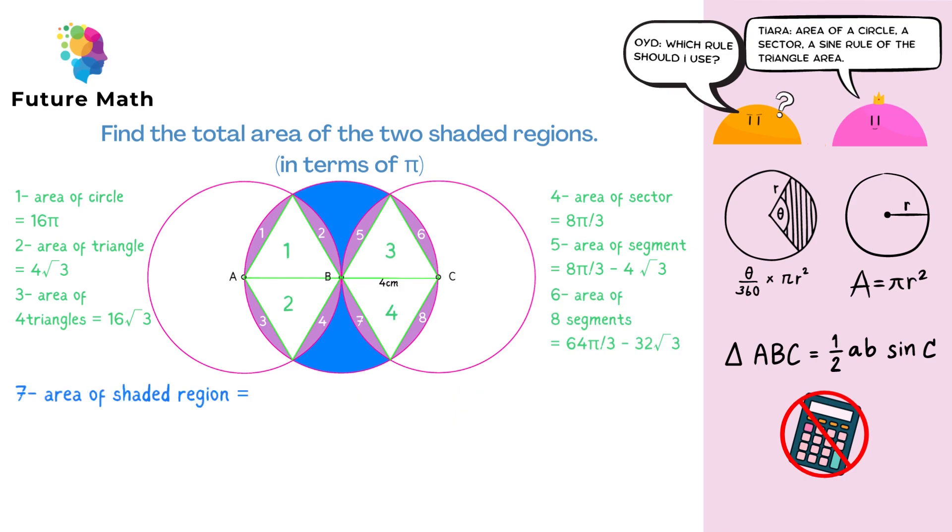Last step is to find the shaded region. So we do the area of a circle, minus the area of four triangles, plus the area of eight segments, which equals 16 pi minus bracket 16 root 3 plus 64 pi over 3 minus 32 root 3 bracket.